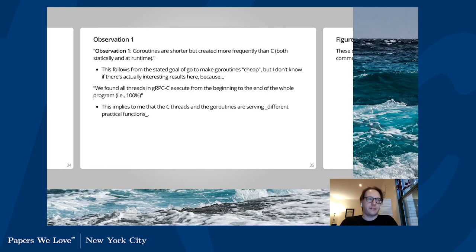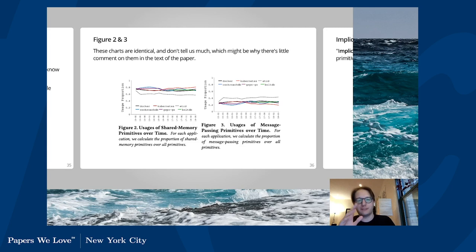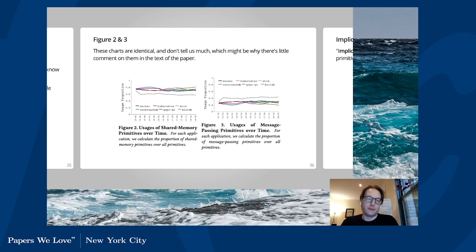Figures two and three are fun because if you look at them, they're identical — they're both percentages of each other. Usage of shared memory primitives over time versus usage of message-passing primitives over time: if there are only those two ways to do it, those are the same graph. It is interesting that usage more or less stays stable over time, with etcd being a particular exception. But I'm not sure what exactly they think they're showing us with these two graphs, and there's little comment given them in the paper.